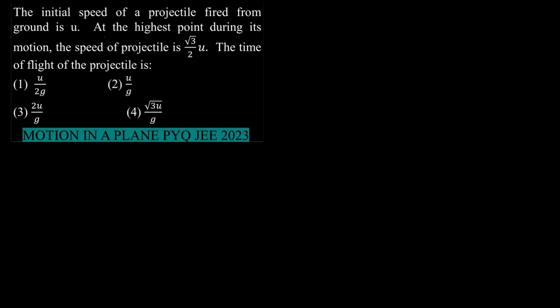Now let us come to this question. So, initial speed of a projectile from the ground is U. We have been given that the body is fired as the projectile with its velocity U at an angle theta. Say, it comes like this, okay? At the highest point, the speed of the projectile is √3/2 U, okay?